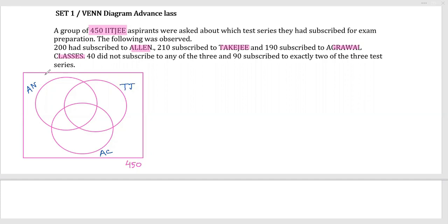Out of those, 200 subscribed to LN, 210 in TakeG, and 190 for Agarwal Classes. 40 did not subscribe — that means outside of all three, 40 is the number. 90 subscribed to exactly two of the three series. Now if I label the regions: small 'a' is only LN, small 'b' is only TakeG, small 'c' is only Agarwal Classes.